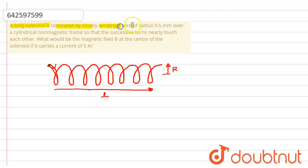The successive turns nearly touch each other. What would be the magnetic field B at the center of the solenoid if it carries a current of 5 ampere?